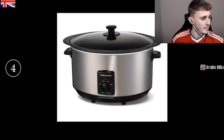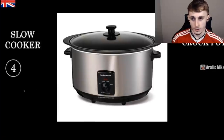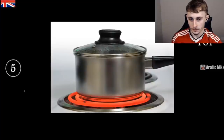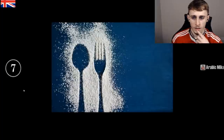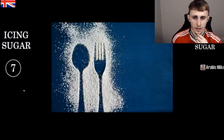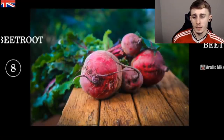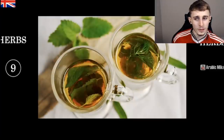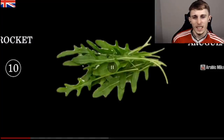A crock pot — we would call that a slow cooker. I think crock pot is actually the brand name. Then a pot — we would call that a saucepan. Silverware — we say cutlery. Confectioner's sugar — we call that icing sugar, which is basically very very fine sugar, like the snow-looking one.